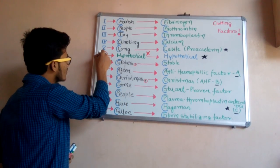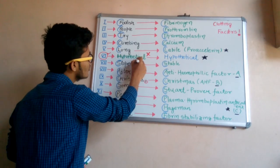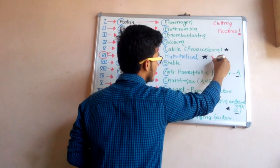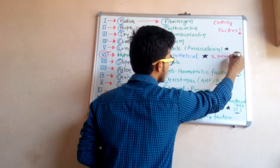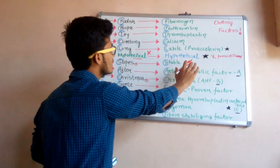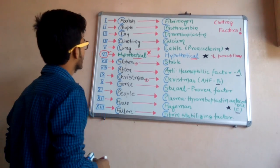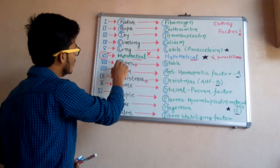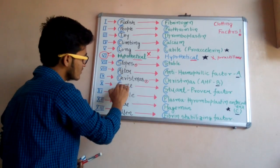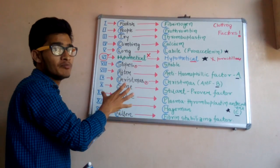First, you have to leave number six. Clotting factor number six is a hypothetical clotting factor — it is not present practically. So in the sentence, after 'long slopes,' the word 'slopes' corresponds to number seven because we have skipped number six.